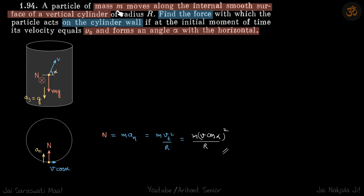We are given a particle of mass m that is moving along the internal smooth surface of a vertical cylinder of radius R. We need to find the force on the cylinder wall due to this mass m, so we need to find basically the normal reaction.